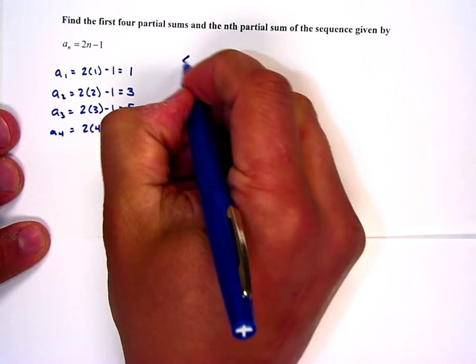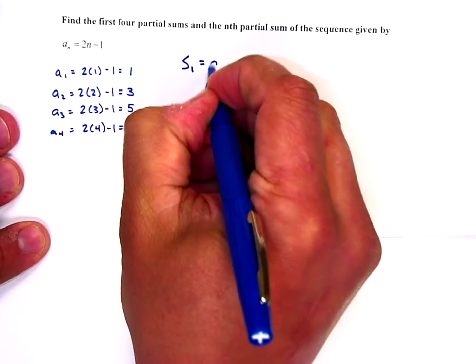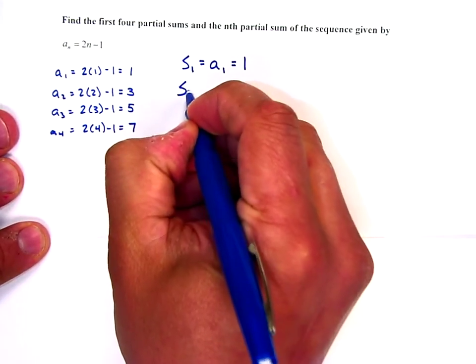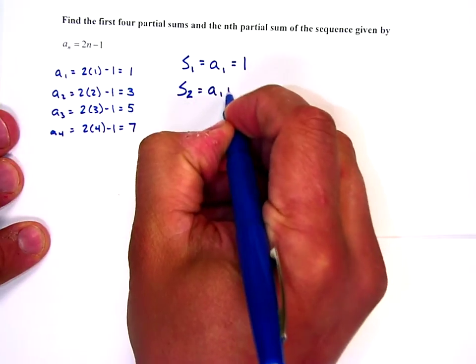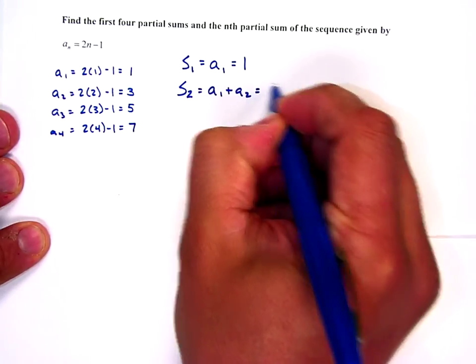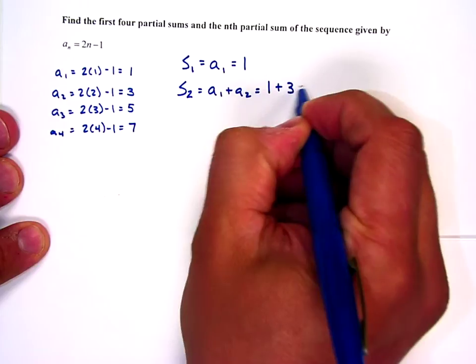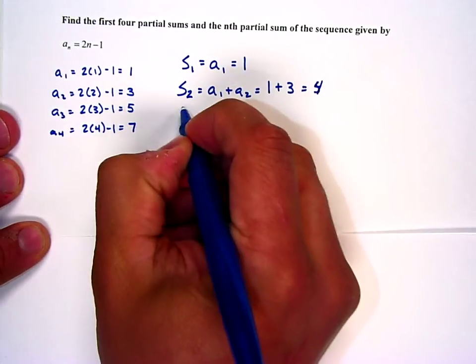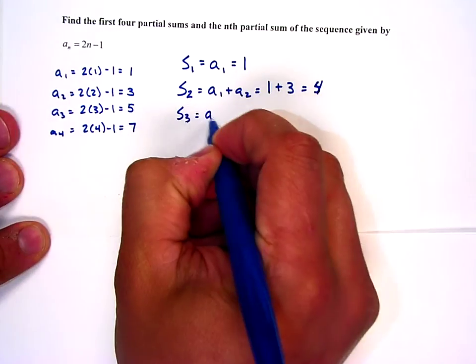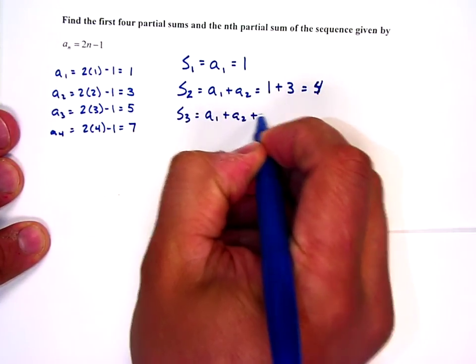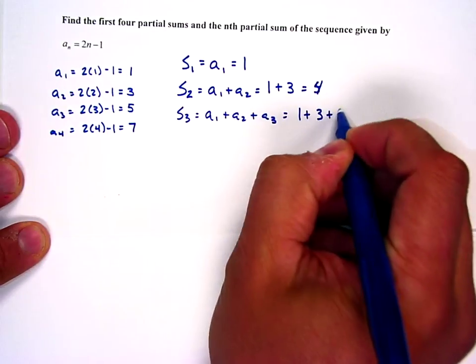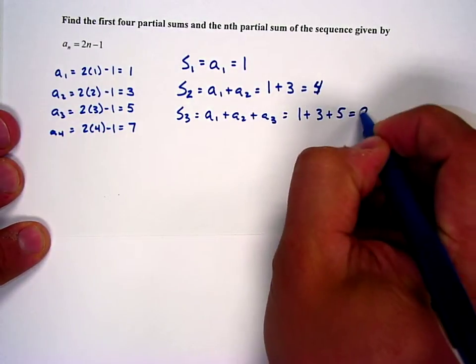Now, if we say, what's the first sum? Well, the first sum is just a sub 1, which is 1. Second partial sum is going to be a sub 1 plus a sub 2. So that's going to be 1 plus 3, which is 4. Third partial sum is going to be a sub 1 plus a sub 2 plus a sub 3. So that's 1 plus 3 plus 5, or 9.